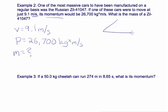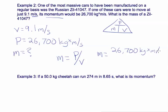So above, I had drawn this. So if we're solving for mass, we have p divided by v, momentum divided by velocity, so 26,700 kilograms times meters per second divided by 9.1 meters per second, we get 2,934 kilograms.